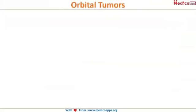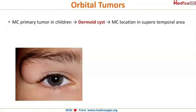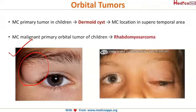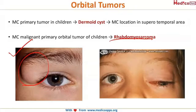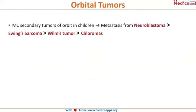Let's look at some tumors of the orbit. The most common primary tumor in children is a dermoid cyst. This swelling in the picture is the dermoid cyst, and as you can see, the most common site of location is the supero-temporal area. The most common primary malignant orbital tumor in children is rhabdomyosarcoma — very commonly asked. Remember: rhabdomyosarcoma is the most common primary malignant tumor of the orbit, while the most common primary tumor in children overall is a dermoid cyst.